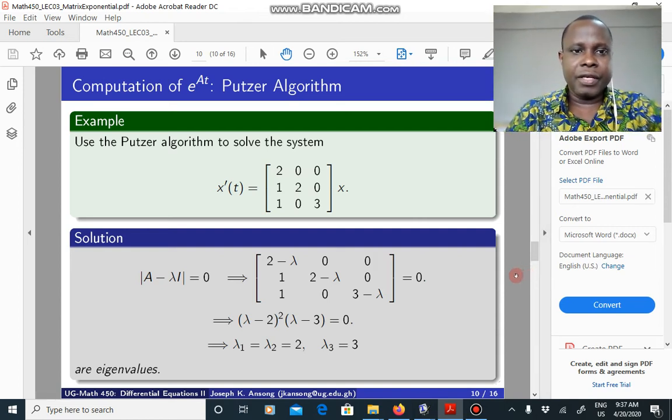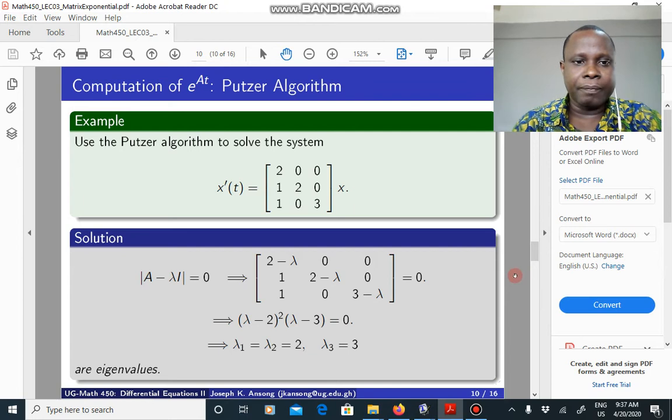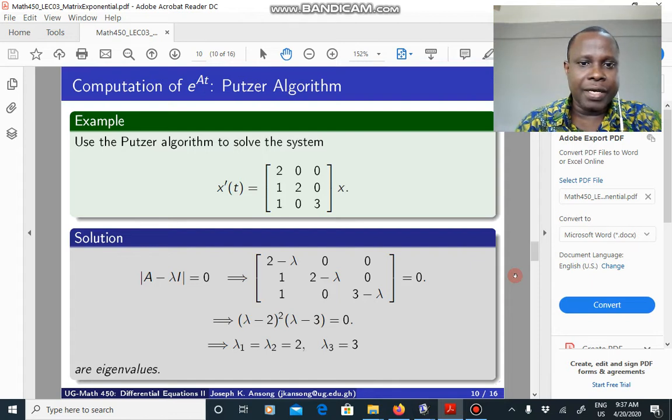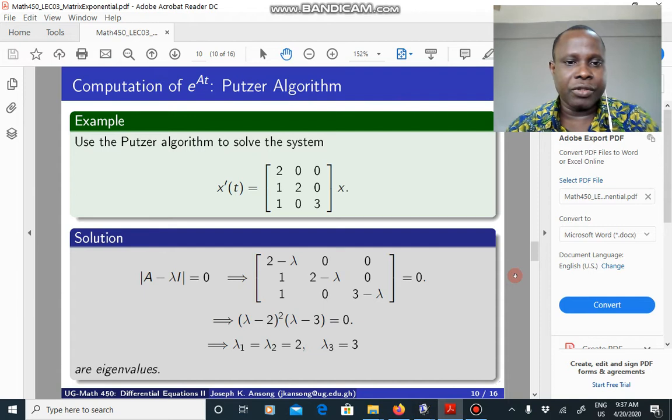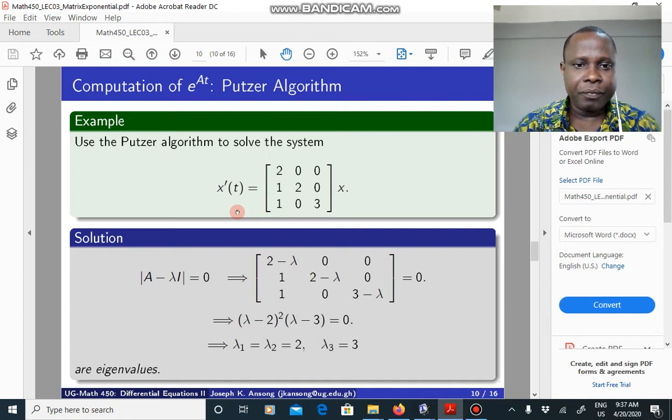Hello guys. So here's a continuation of the Putzer algorithm. In this lecture I want to look at a second example of how you apply the algorithm to find a matrix exponential or to solve a system of equations. So here we have a 3 by 3 system which is given by this. I want to solve it.